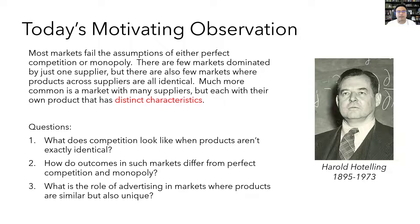The motivating observation for today is that most markets don't seem to be well described by either perfect competition or monopoly — the two market structures we've studied so far. In most markets, products aren't exactly identical, so that doesn't quite fit the assumption of perfect competition. And in most markets, there's a lot more than just one seller, so that doesn't fit the assumptions of monopoly either. Much more common is a market that has many sellers, but in which each seller has a slightly different product with its own unique characteristics.